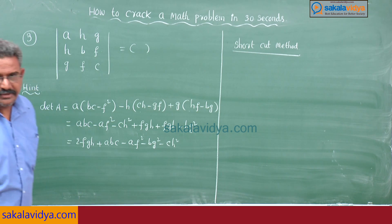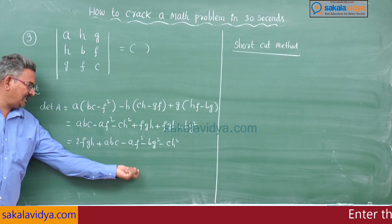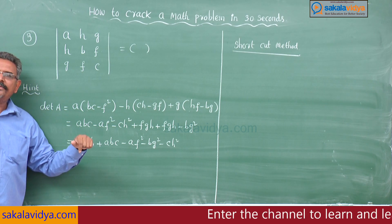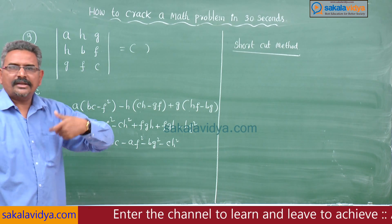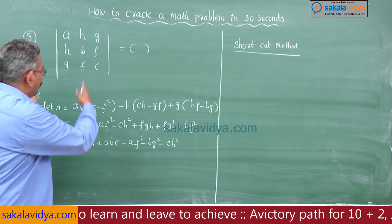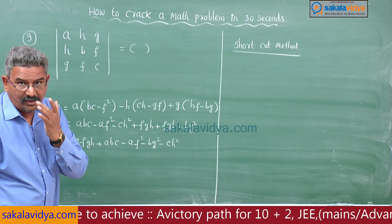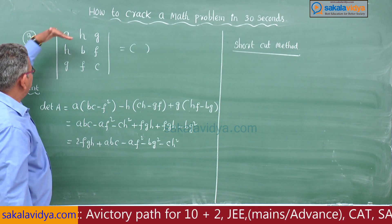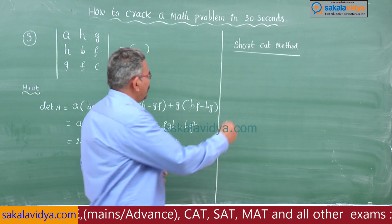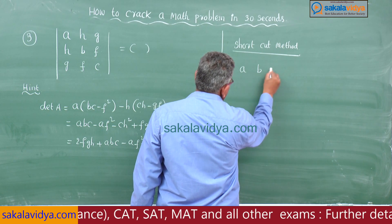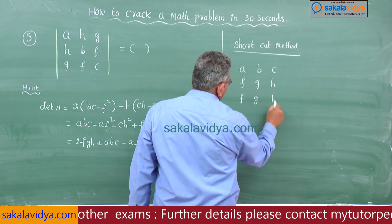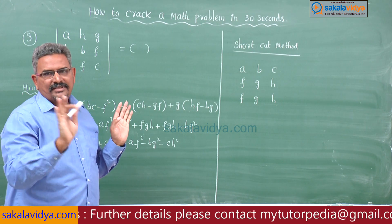Now the shortcut method. Whenever problems involve the expression 2FGH + ABC − AF² − BG² − CH², this applies — even for pair of straight lines problems. In the matrix [A,H,G; H,B,F; G,F,C], the elements are A, B, C, F, G, H. Simply arrange them as: first row A B C, then F G H, then F G H again.